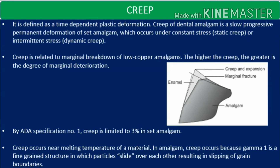The next important property is creep. Creep is defined as time-dependent plastic deformation of amalgam. It is a slow, progressive, permanent deformation of the set amalgam which occurs under constant stress — that is static creep. Static creep is deformation under constant stresses; intermittent stress leads to dynamic creep. So there are two types: static and dynamic.